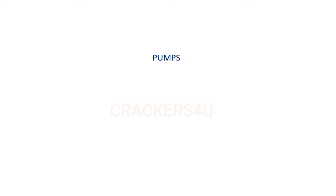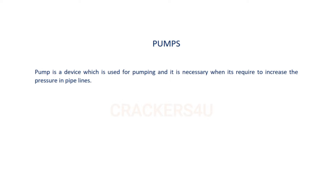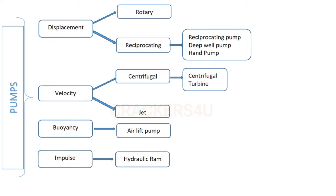Dear friends, today we are going to discuss about pumps, which is a major part of plumbing. Here we will go through some previous questions based on ITI and PSE. A pump is a device used for pumping, and it is necessary when required to increase the pressure in pipelines. Classification of pumps: displacement pumps, velocity pumps, buoyancy pumps, and impulse pumps. Displacement pumps are divided into rotary and reciprocating; velocity into centrifugal and jet; buoyancy into airlift pump; impulse into hydraulic pump.